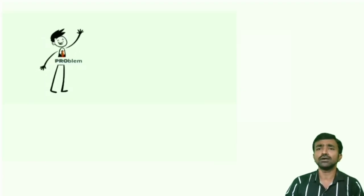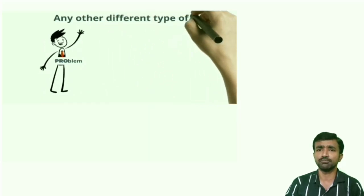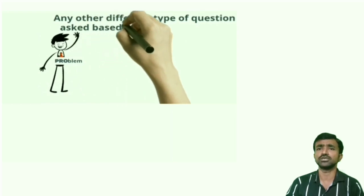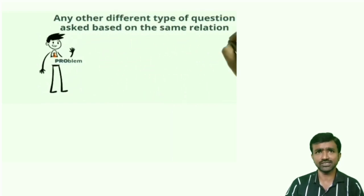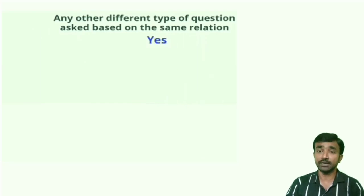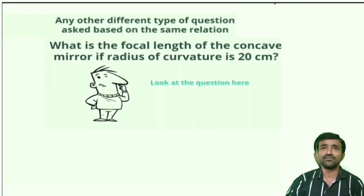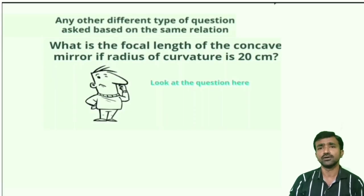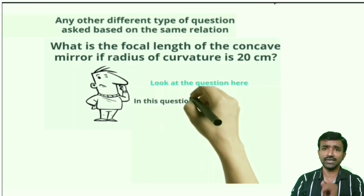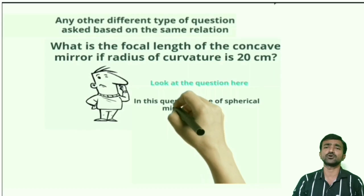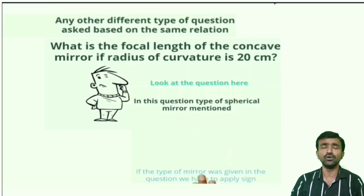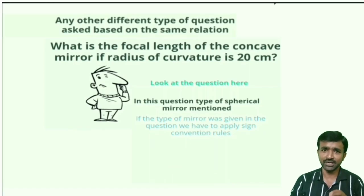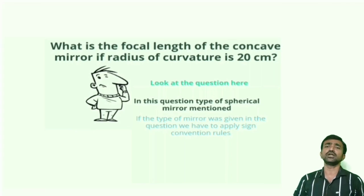There are other possibilities for questions based on this relation. One possibility is by giving the type of spherical mirror. For example: what is the focal length of a concave mirror if the radius of curvature is 20 centimeters? Notice the difference — now the type of mirror is specified as concave, so you need to apply sign convention rules.